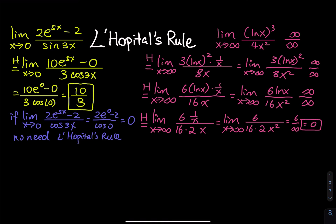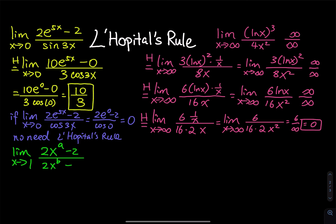For the third limit, we have the limit as x approaches 1 of 2x to the a power minus 2, divided by 2x to the b power minus 2, where b cannot equal 0. When you plug in x equals 1, since 1 to any power is 1, you have 2 minus 2 divided by 2 minus 2, giving 0 over 0. So we apply L'Hôpital's rule.